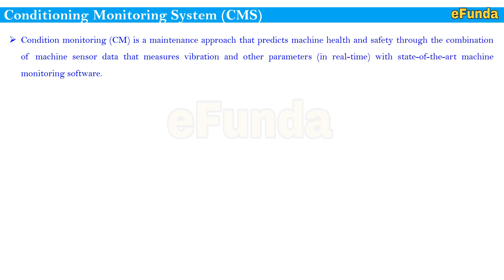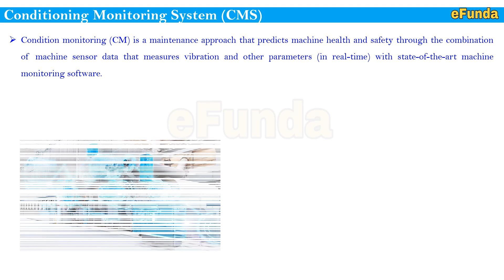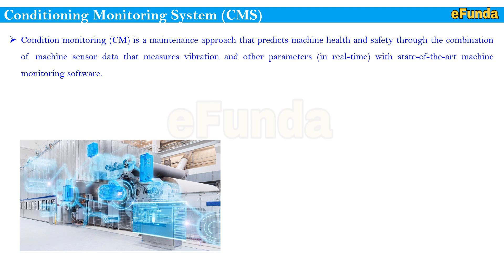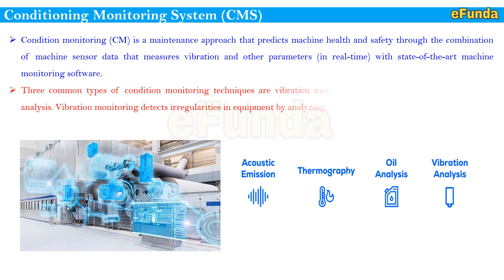Condition monitoring system, that is CMS — condition monitoring is a maintenance approach that predicts machine health and safety through the combination of machine sensor data that measures vibration and other parameters in real time. There are commonly three types of condition monitoring techniques used: vibration monitoring, temperature monitoring, and oil analysis — which are the key factors of measurement or monitoring techniques for CMS.